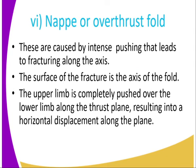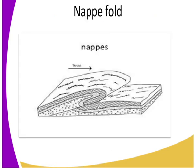Then we have the nappe or overthrust fold. These are caused by intense compression that leads to fracturing along the axis. The surface of the fracture is the axis of the fold. The upper lip is completely pushed over the lower lip along the thrust plane, resulting in horizontal displacement of the upper lip. You can see in the diagram where the fracture is and how one section has been completely pushed on top of the other.